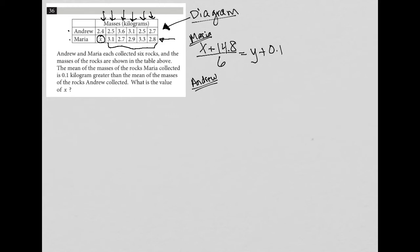So the average for Andrew, again, is just adding up all of his masses. I'm now in row one and dividing that by six. So we have 2.4 plus 2.5 plus 3.6 plus 3.1 plus 2.5 and plus 2.7 equals I'm getting 16.8. I divide that by six and I get 2.8.